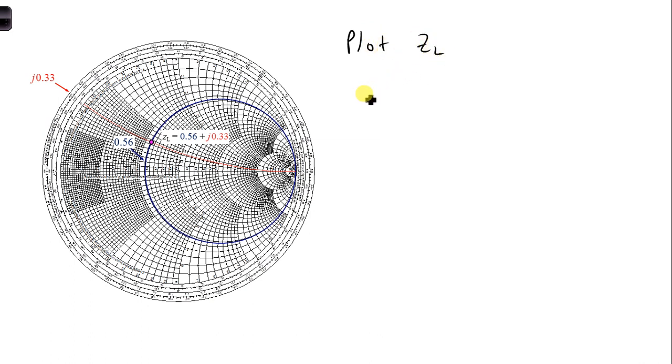In order to plot a load impedance on the Smith chart, we first have to normalize it. So ZL, we take capital ZL over Z naught, you can plug in your values, and we get 0.56 plus J 0.33.